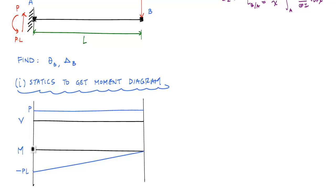Because my EI is constant, I can just straight up divide the moment diagram by EI and I would have the curvature diagram, which would have the exact same shape. So my moment diagram gives me the curvature diagram directly, because EI is constant.